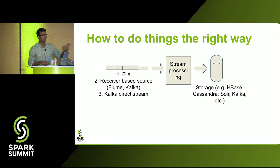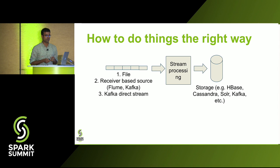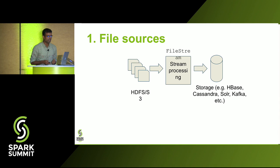There are three different ways to have data sources in Spark Streaming: you could be reading from a file like S3 or HDFS, using a receiver to read from Flume or Kafka, or using a separate Kafka direct stream. The right approach is different for each of these categories.